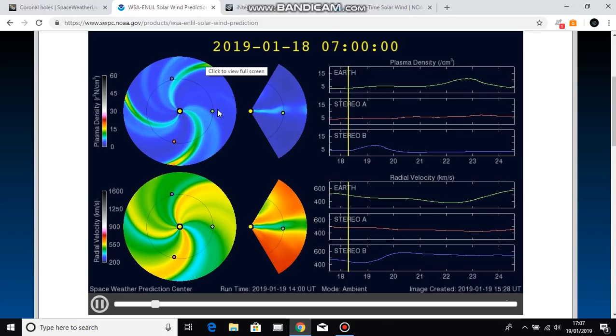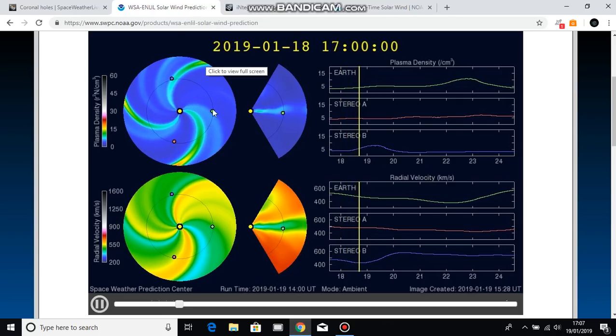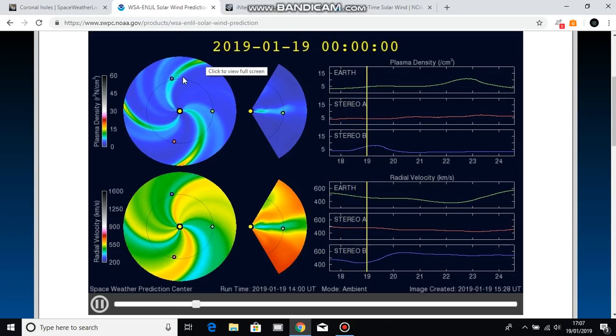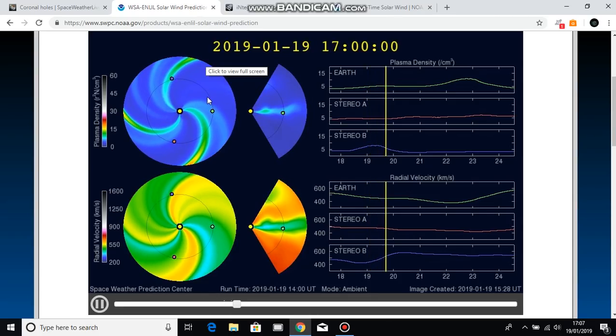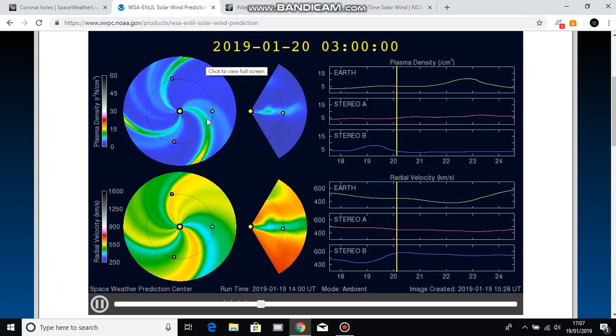So that just gives you an idea of what you're looking at here. The sun is always in the center. Earth is always to the right. This is a bird's eye view. This is the geosynchronous orbit. Just so you can get a better understanding of what you're looking at here.